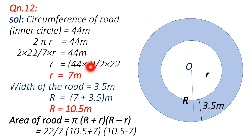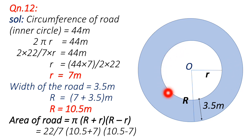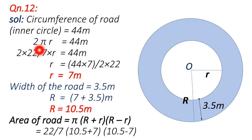Now for question number 12: the circumference of a road is given. We consider the inner boundary as the smaller circle. The circumference is given as 44 meters, and the formula is 2πr. So 2 × (22/7) × r = 44, which gives r = 44 × 7 ÷ (2 × 22), so r equals 7 meters — that is the radius of the inner circle.